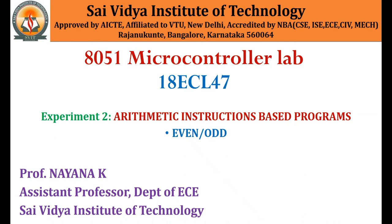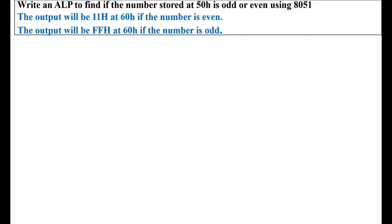Hello everyone. In this video lecture, let us understand Experiment 2: arithmetic instructions based programs to determine if the given number is even or odd. The problem statement is as follows: write an ALP to find if the number stored at 50H is odd or even using 8051.